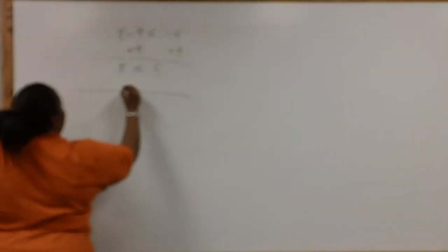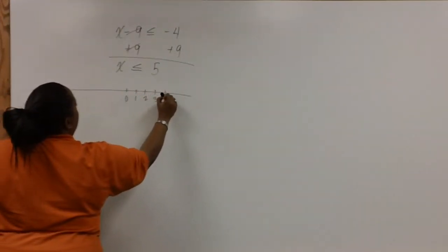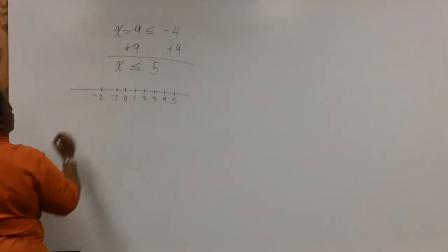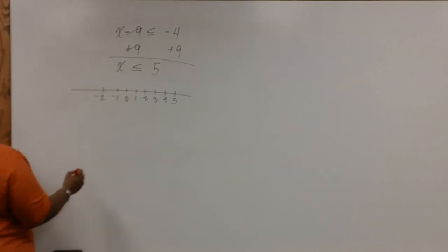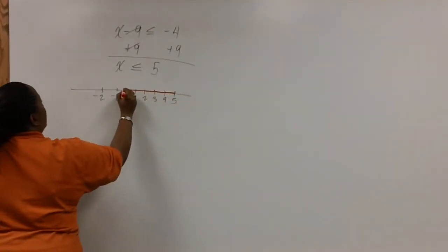So when we draw a graph, we want the arrow to point in the direction where all numbers are less than 5, which means that we want all the numbers to the left of 5.